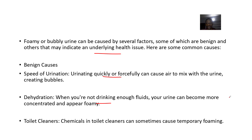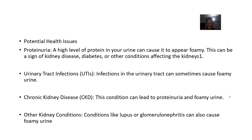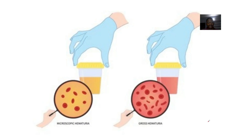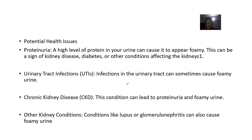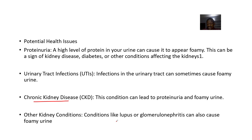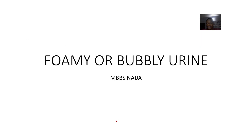Now for potential health issues related to foamy urine: proteinuria is the presence of high levels of proteins in the urine, and this can appear foamy — it can be a sign of kidney disease. Urinary tract infections, chronic kidney disease, and other kidney conditions like lupus nephritis — caused by complications from systemic lupus erythematosus — as well as glomerulonephritis, can all also cause foamy urine. And that does it for foamy or bubbly urine.